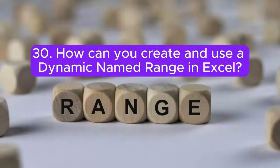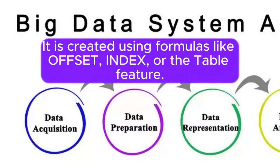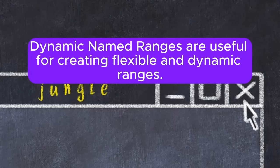Question 30: How can you create and use a dynamic named range in Excel? A dynamic named range adjusts its size automatically as data changes. It is created using formulas like OFFSET, INDEX, or the table feature. Dynamic named ranges are useful for creating flexible and dynamic ranges.